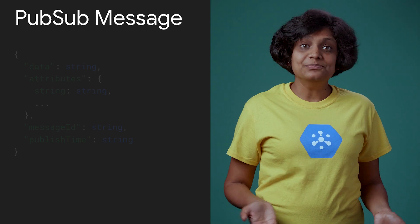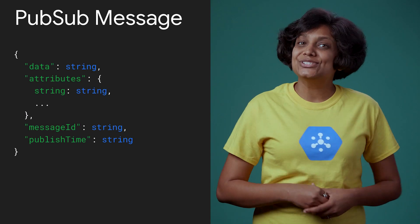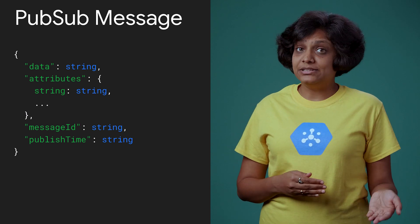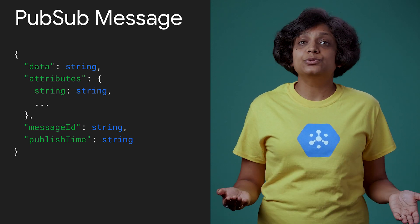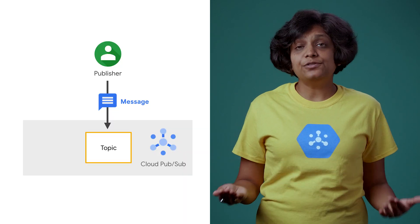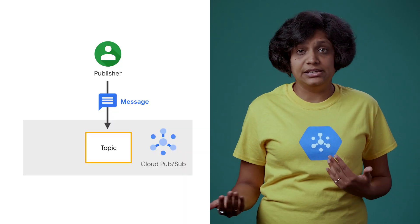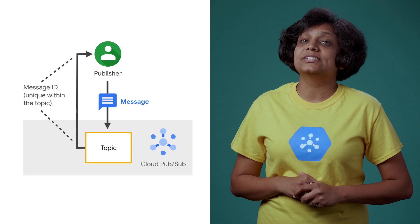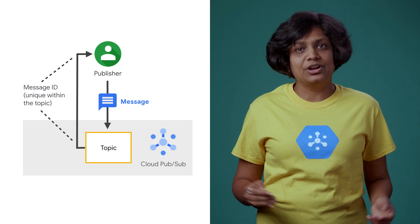What can you include in the message itself? Here's the message schema. You can embed custom attributes as metadata in the messages. Attributes can be text strings or byte strings. A server-generated ID unique within the topic is returned on the successful publication of a message. If you would like to see an example of publishing a message, check out the previous episode.